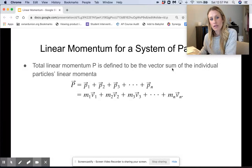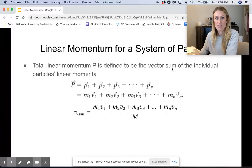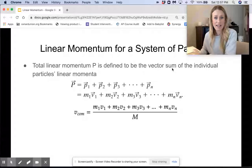Now this might look a little familiar from the beginning of this chapter. M1 times V1 plus M2 times V2 plus M3 times V3. You might remember that if we're going to find the velocity of the center of mass, then all we have to do is divide this whole thing by big M, the total mass of the system.